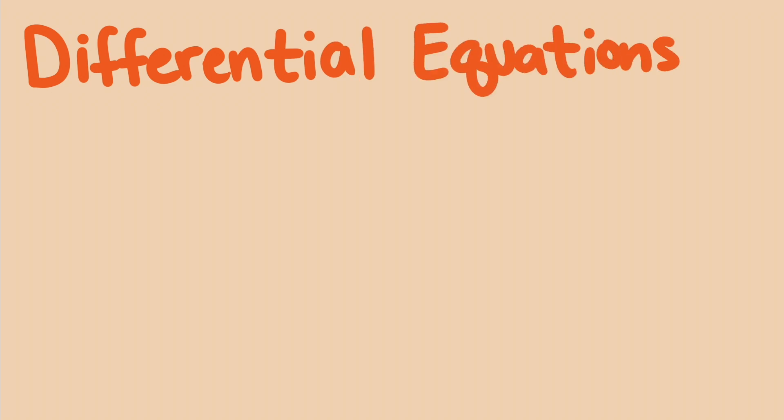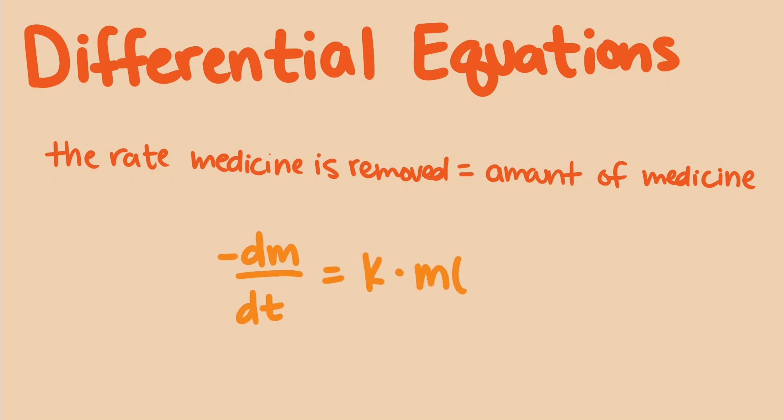If you have had calculus or differential equations, the language would be that the rate the medicine is removed from the body is proportional to the amount of medicine and could be written this way. In other words, the derivative of the blood concentration is proportional to the blood concentration. You may remember that it is an exponential function that has this property.